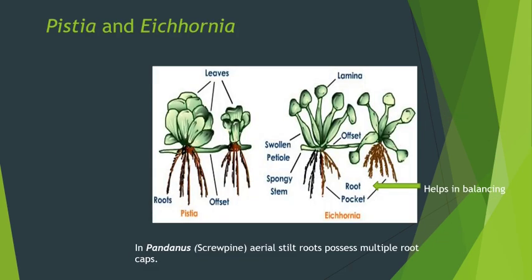A special character is present in aquatic plants like Pistia and Eichhornia — instead of a root cap, they have root pockets. These root pockets are filled with aerenchyma (air), which helps in giving buoyancy for these floating hydrophytes to float in water and helps in balancing the plant as well. In Pandanus (screw pine, called kevda in Marathi), there are aerial stilt roots, and from many nodes, numerous stilt roots come out giving support to the Pandanus stem, so it has multiple root caps.